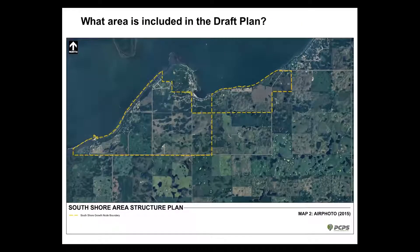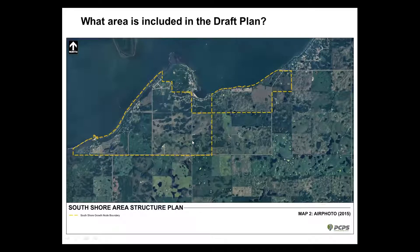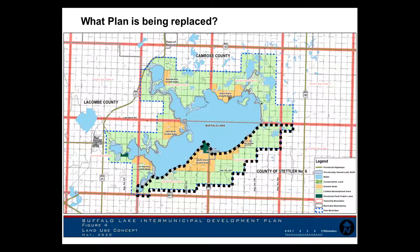The area covered by the draft plan is shown on the air photo from 2015. All lands within the yellow dashed line are intended to be covered by the South Shore Area Structure Plan. That includes the old McDonald's Resort in the far west, Highway 835 roughly in the middle, all the way east to the area between Roshan Sands and the Summer Village of White Sands. It does not include any land within the Summer Villages.